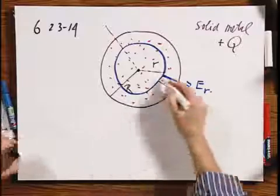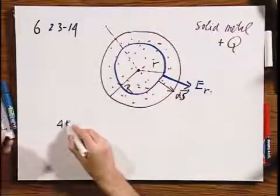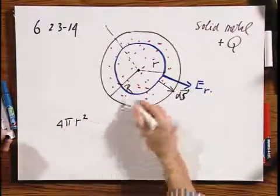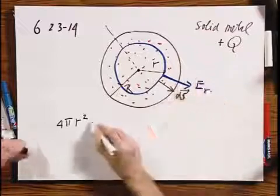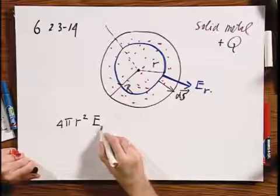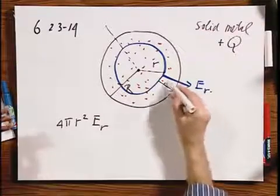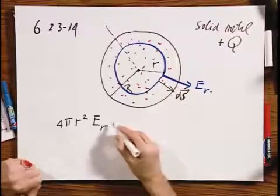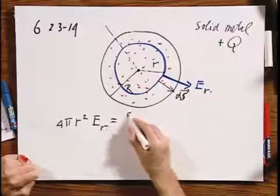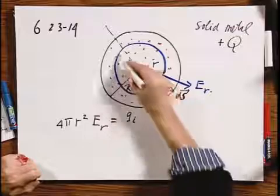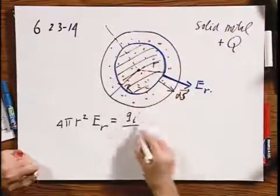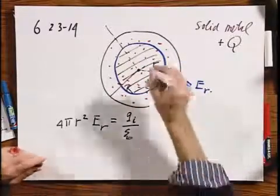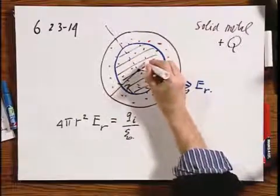So I apply Gauss's law. 4 pi R squared, that's the surface area, times E. Forget the dot, because the cosine of the angle is plus one. That now must be the charge inside this sphere, divided by epsilon zero. And this charge inside the sphere is not zero.